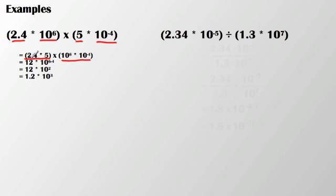So then my first step of 2.4 times 5 yields me 12. And then in order to get my next step, well, I have similar bases being multiplied together. So I take the exponents, add them together, 6 plus a negative 4, which is essentially 6 minus 4. And that leaves me 10 to the second.